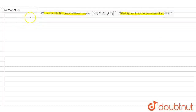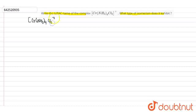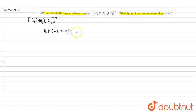So, our complex is... First, we write the oxidation state of chromium. The charge of ammonia is zero and the charge of chlorine is minus one. So, minus two is equal to plus one, and the value of x is plus three.